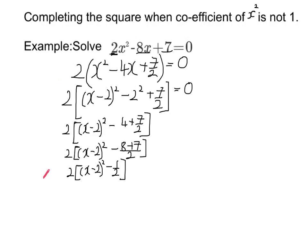At this point, I am ready to bring my 2 back in and get rid of my square brackets. I've got 2 lots of this, and 2 lots of that, which gives me minus 1. I'm going to fill in my equals zero that I've left out.